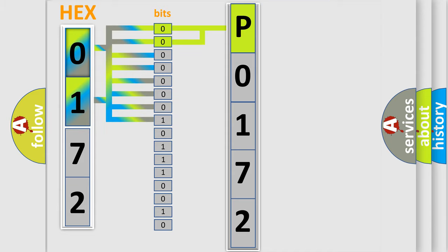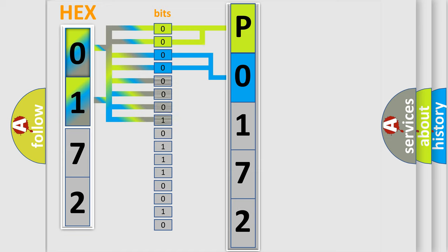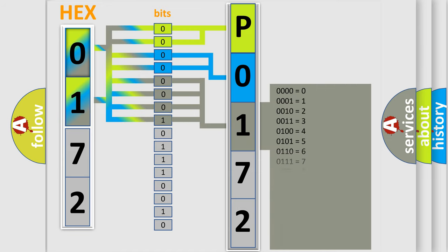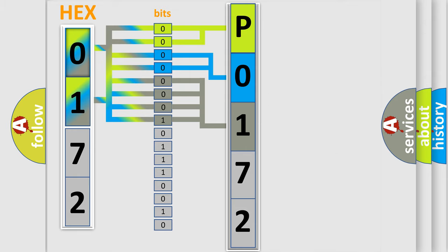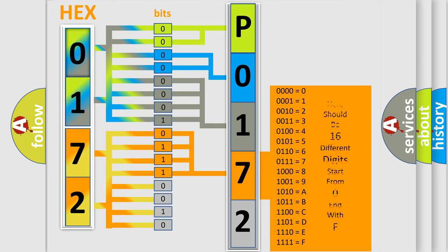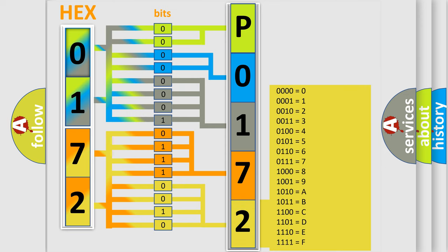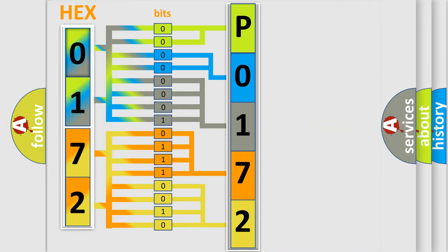The next two bits determine the second character. The last bit styles of the first byte define the third character of the code. The second byte is composed of a combination of eight bits — the first four bits determine the fourth character, and the last four bits define the fifth character. A single byte conceals 256 possible combinations.